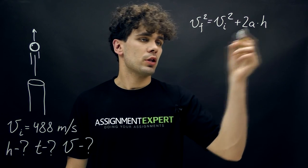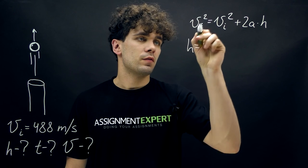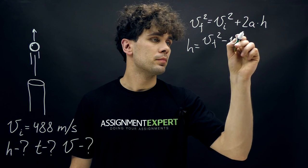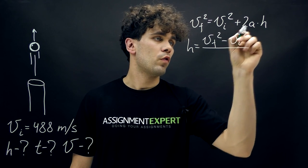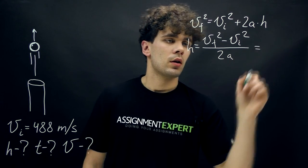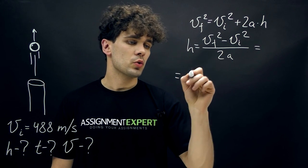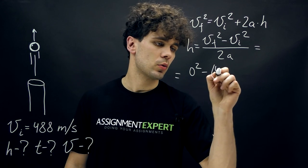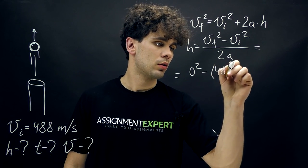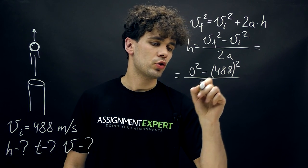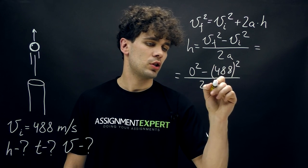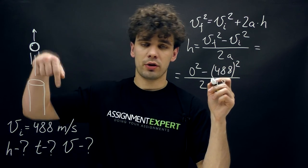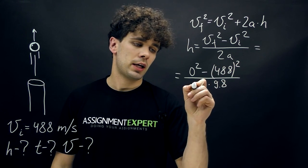So from this equation we can derive h as Vf squared minus Vi squared over 2a. And this gives us 0 squared minus 488 squared over 2 times 9.8. And here the acceleration is directed downwards so we need to add a negative sign.